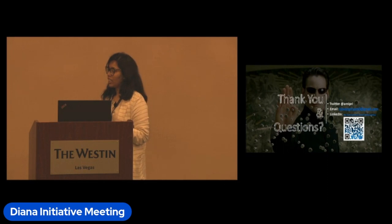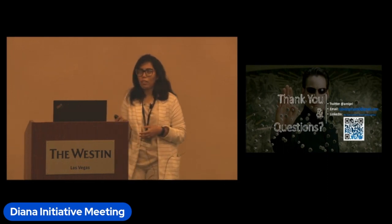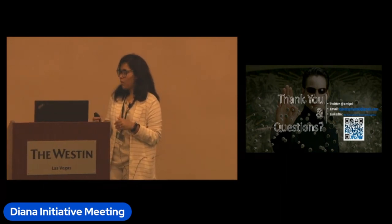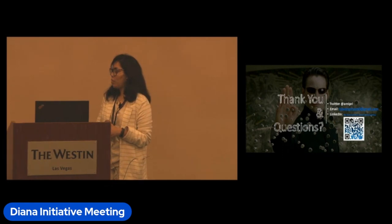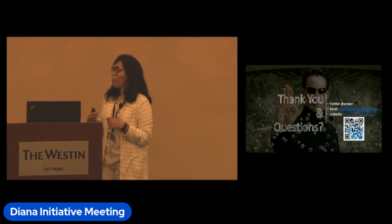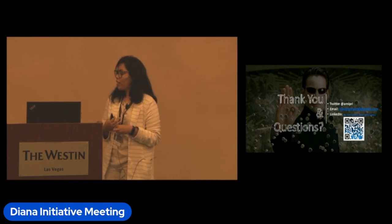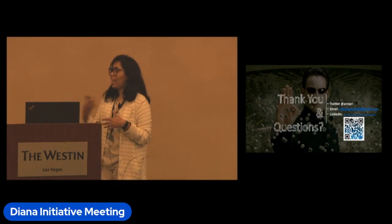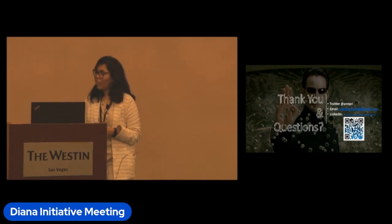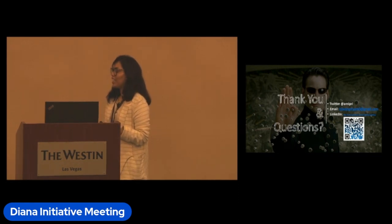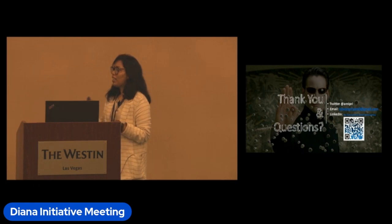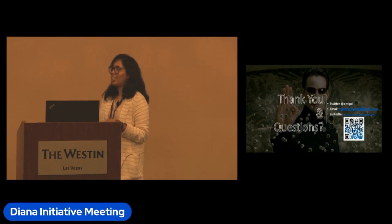Does fuzzing incur false positives or false negatives? Fuzzing has very few false positives because we have the dynamic runtime context. But it incurs a lot of false negatives because if we don't give the perfect inputs, chances are we're missing the bug. So: very few false positives unlike static analysis techniques, but many false negatives can happen. You can use crash triaging to understand whether a crash is actually exploitable or not.